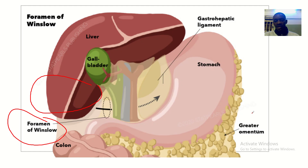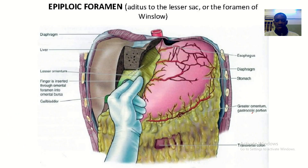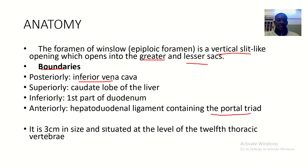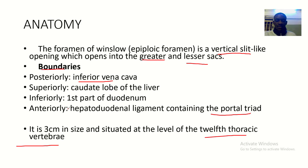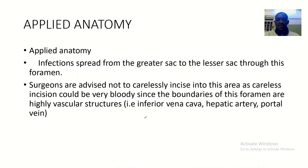Anteriorly, the foramen of Winslow is bounded by the hepatoduodenal ligament containing the portal triad. It is three centimeters in size and situated at the level of the twelfth thoracic vertebra. To summarize the boundaries: posteriorly IVC, superiorly caudate lobe, inferiorly first part of duodenum, anteriorly the hepatoduodenal ligament.